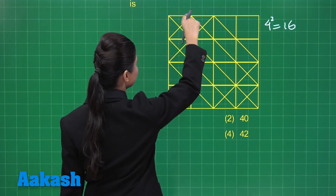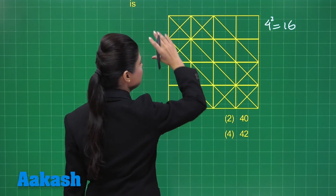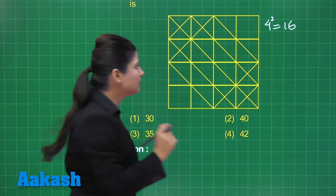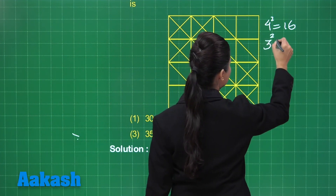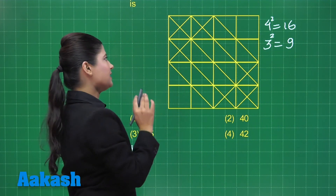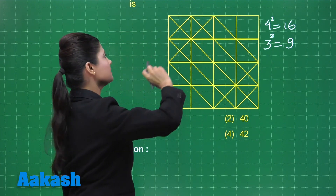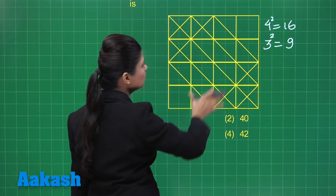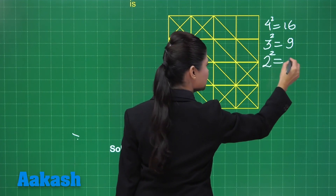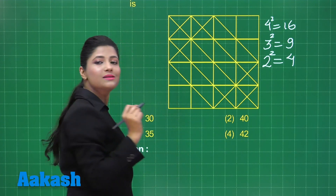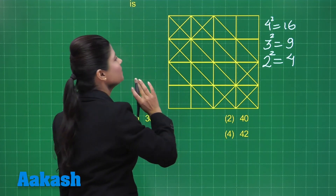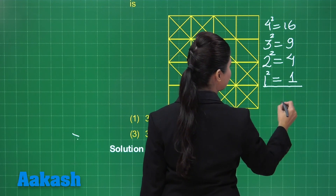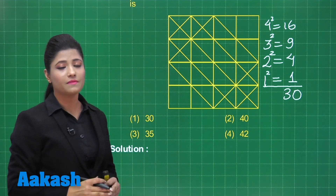For squares of side 3 units — containing 9 smaller squares — they appear in 2 rows and 2 columns, giving 2 squared = 4 squares. For squares of side 4 units — the full grid — there is only 1, found in 1 row and 1 column. So in total we are getting 16 + 9 + 4 + 1 = 30 such squares. But that is not sufficient; we also need to consider squares along the diagonal.